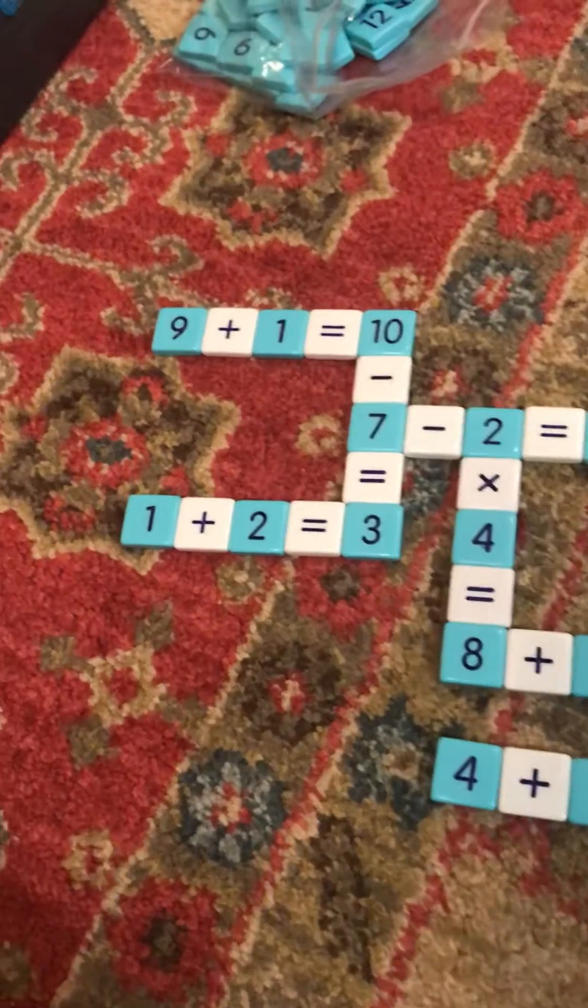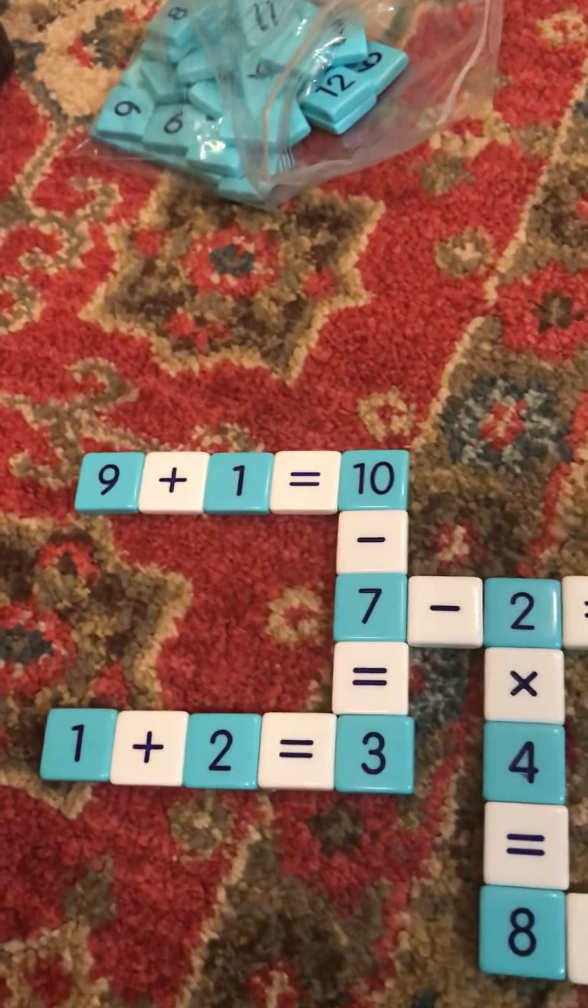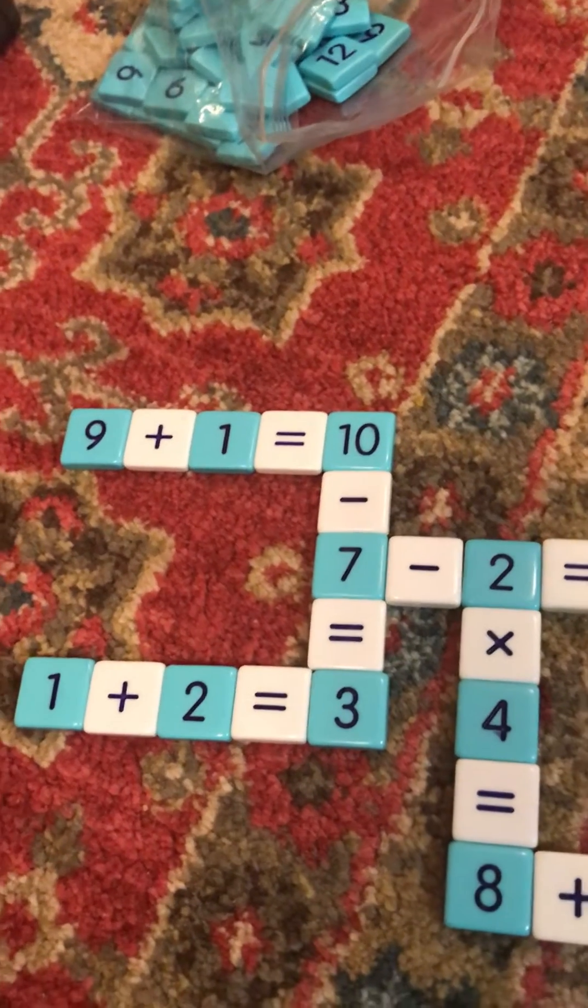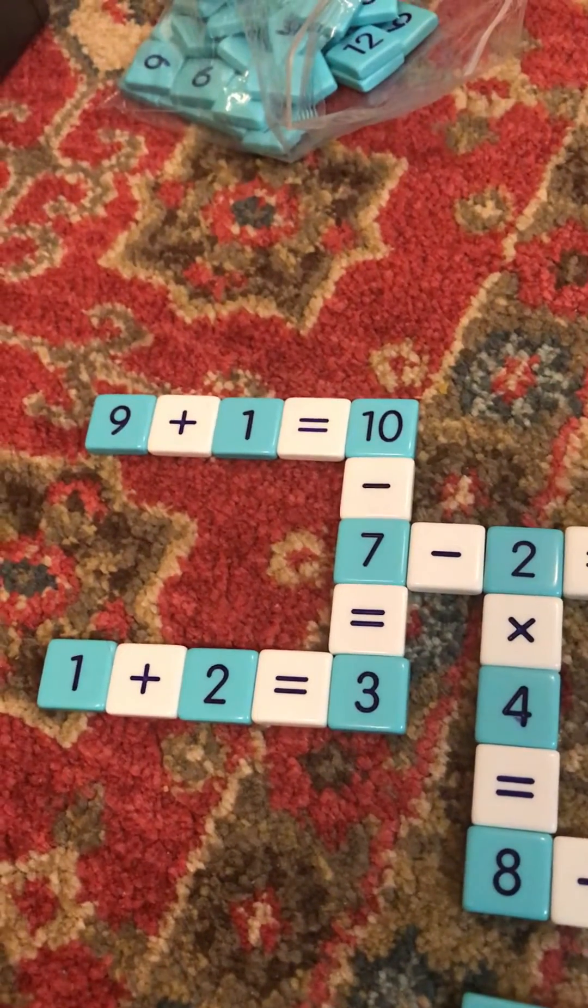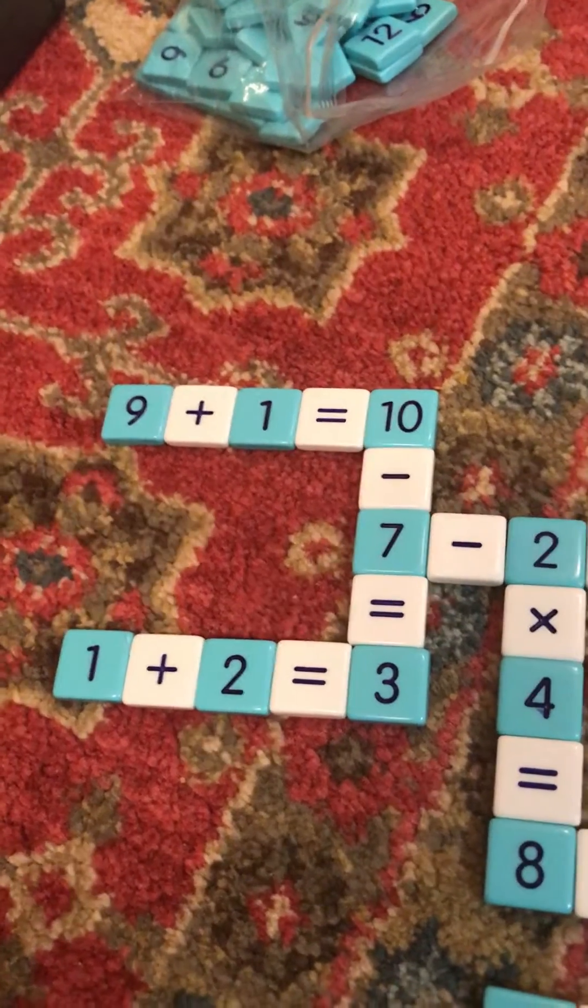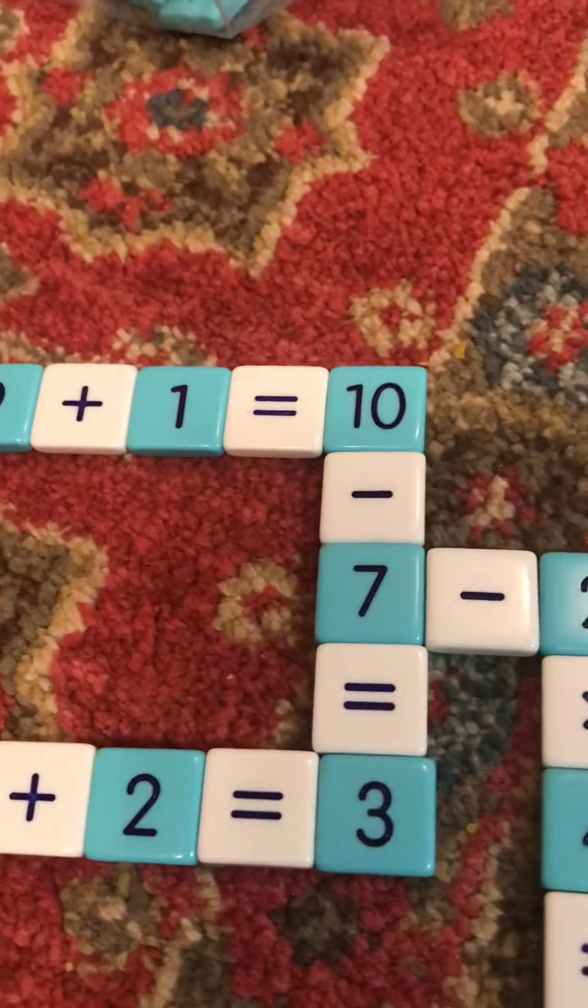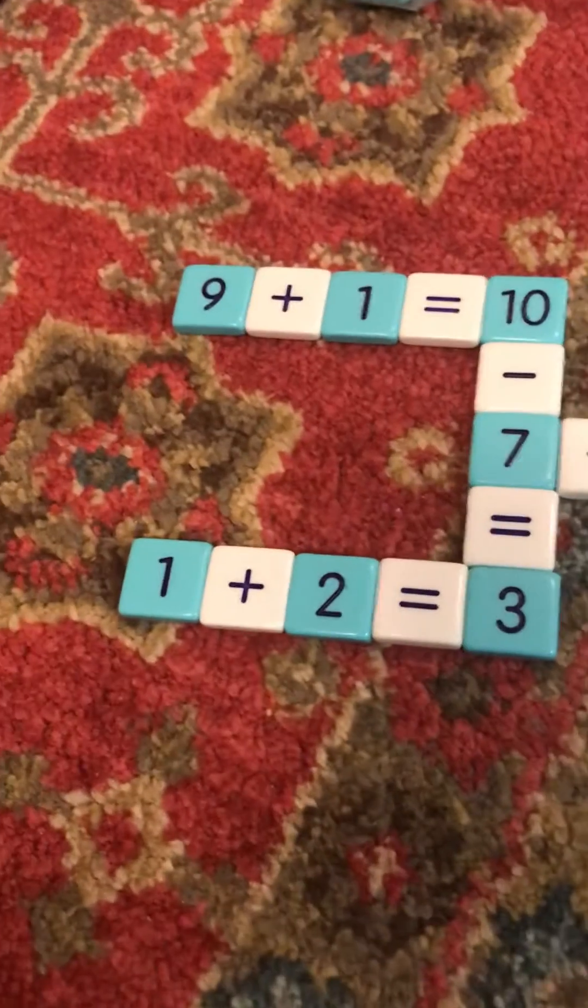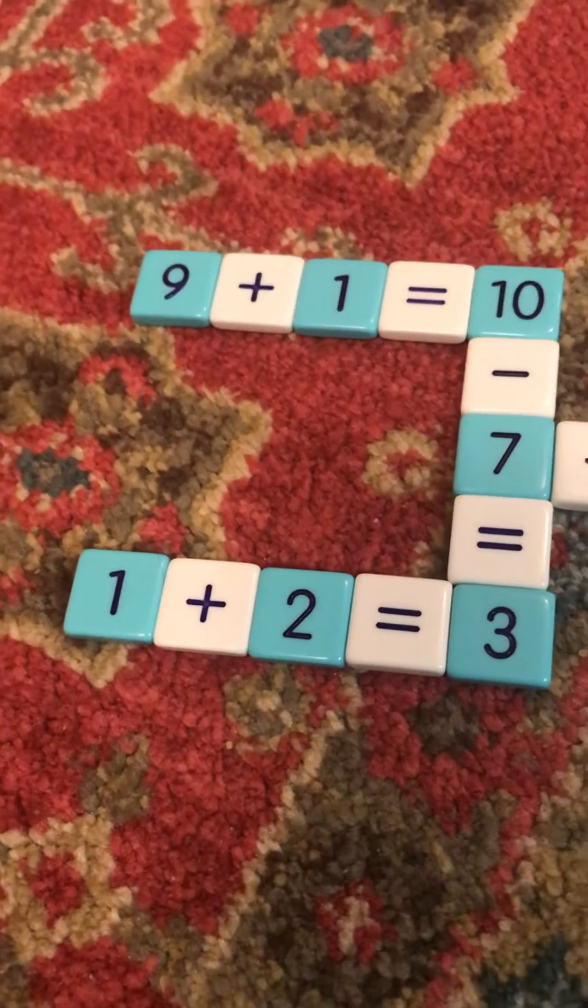So the first one on the top, it says 9 plus 1 equals 10. And from this number sentence, the addition, I made a subtraction called 10 minus 7 equals 3. And there is another addition on the bottom, which means it's 1 plus 2 equals 3.